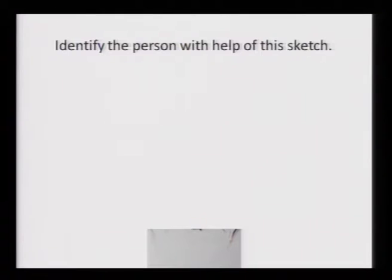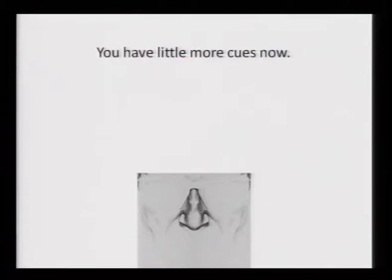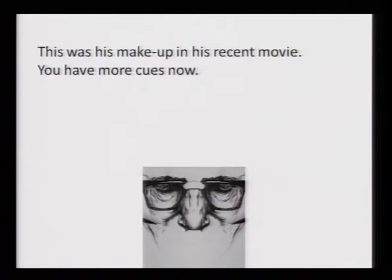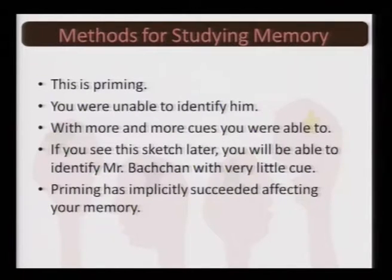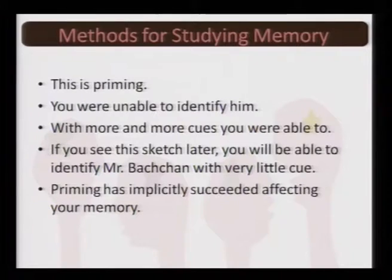You are given a part of a face and told to identify the person, which you are unable to do. With a little more cue added, you still cannot identify who it is. But with enough cues — including a sketch from his recent movie — you can easily identify the sketch as Mr. Amitabh Bachchan, one of the most celebrated actors of India. You were initially unable to identify the person, but with more and more cues you were able to do so. Now if you see the same sketch later with very little cue, you would be able to identify someone you were initially not capable of recognizing.